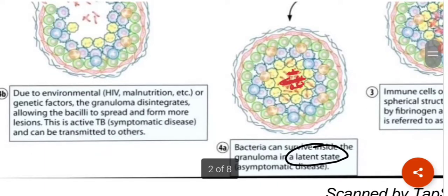In active tuberculosis, the bacteria begin to multiply and symptoms become visible. These include weight loss, fever, chills, influenza-like symptoms, sweating, anorexia, dry cough, and anemia. Many such symptoms can be seen in tuberculosis.